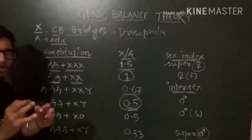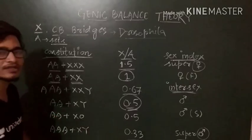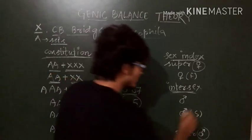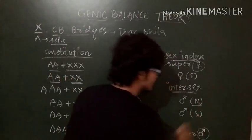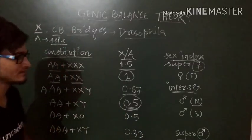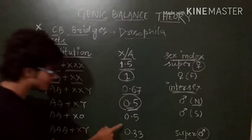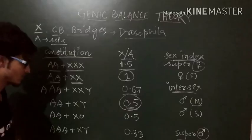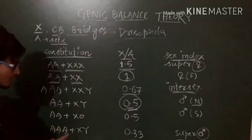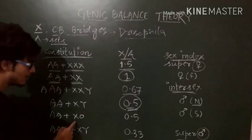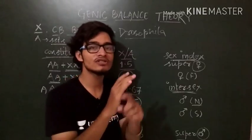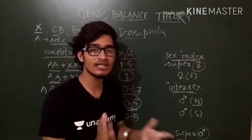0.67, intersex, obviously cannot reproduce. 0.5 male. In this case, XY is present, normal chromosomes. AA is present, normal autosomes. The male is normal and the male is fertile. In the next case, it is same, but A are normal, that is autosomes are normal. X and O are abnormal because there is no Y chromosome which used to decide the maleness.